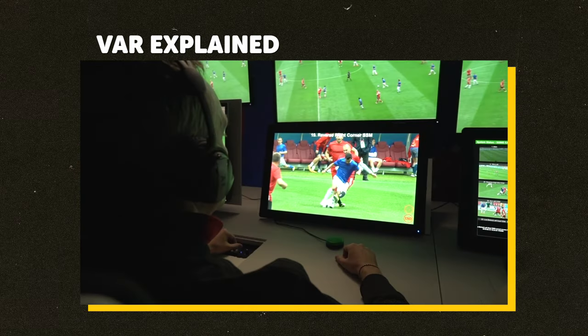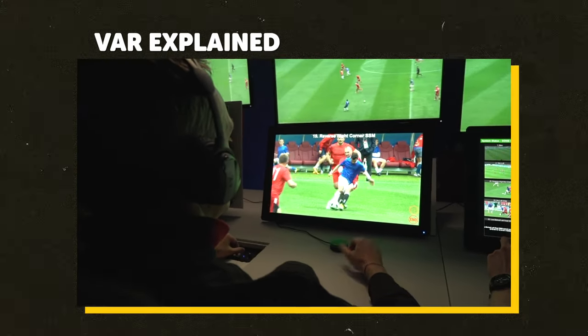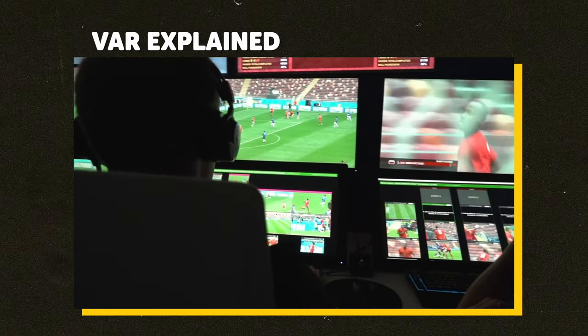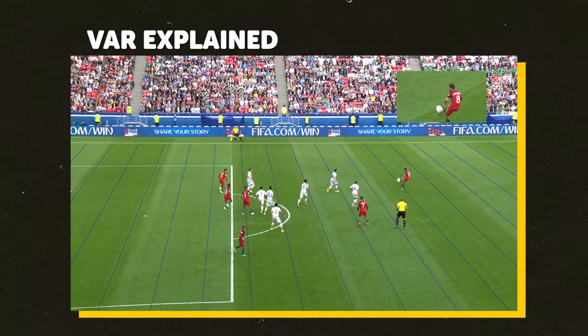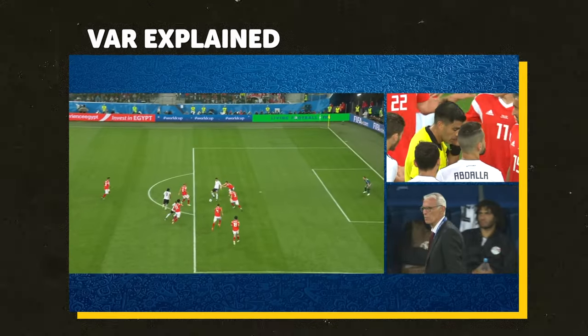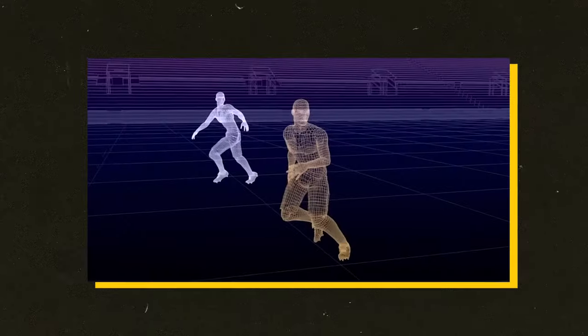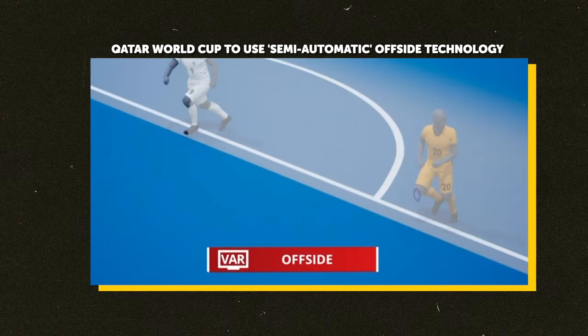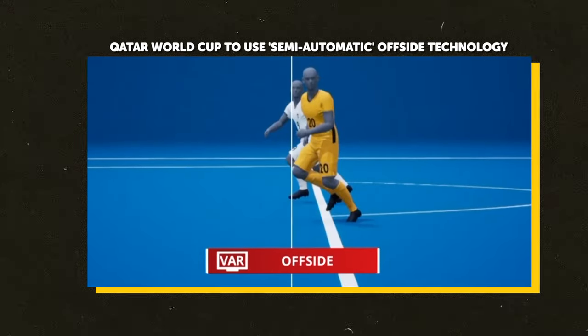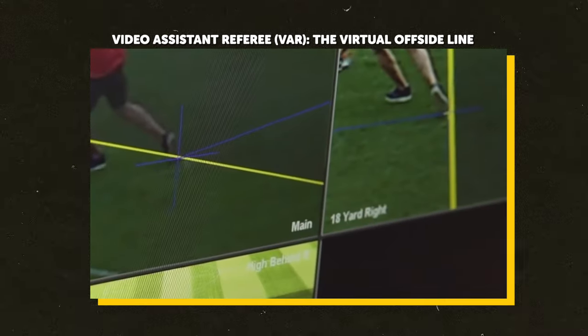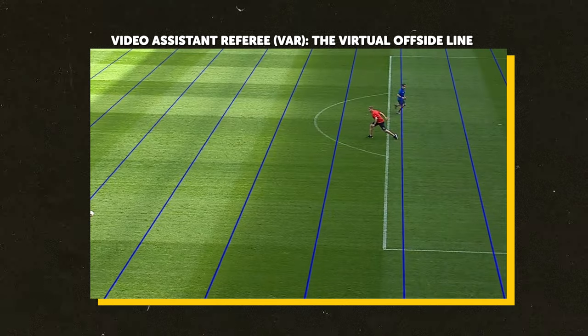The VAR team — the video assistant referee system — also has access to all 42 broadcast cameras to review potential fouls or offside decisions, most of which get played back for viewers at home. However, there are additional cameras specifically for the VAR system not seen in the live broadcast. We do get to see those PlayStation 1-style 3D representations of fouls and offsides, made possible by 12 motion cameras on the underside of the stadium's roofs, all powered by AI.